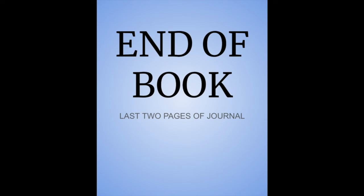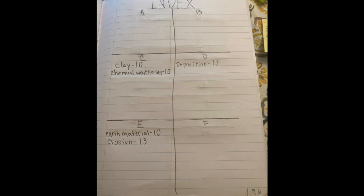So now I want you to go to the end of your notebook. The last two pages of our journals are being used as our index. Our index is where we have a list of all the vocabulary words in our notebook with the page number on them. So the first page, page 196, starts with the letters A through F. And we have the words, clay, chemical weathering, under C.